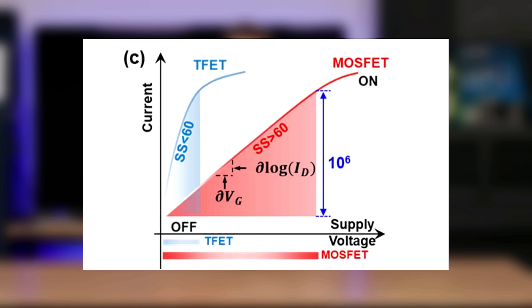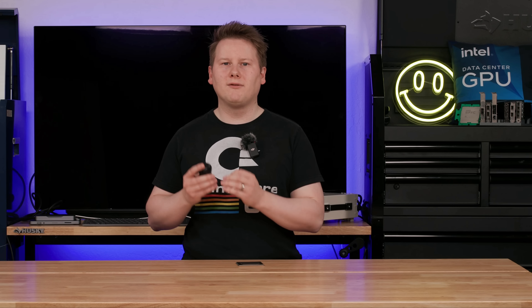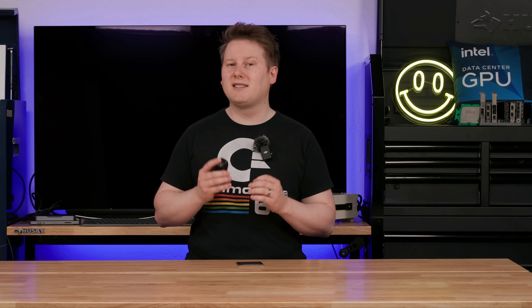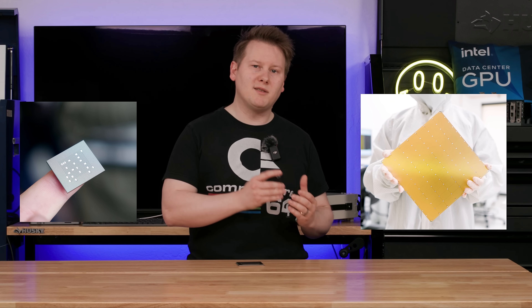The energy required to do this is much less than a standard transistor. The fundamental limit was previously 60 millivolts per decade, yet in this research paper, with the 2D channel material used, the group were able to achieve 18 millivolts per decade — a 70% decrease. Reducing the active voltage for modern processors by 70% would be a sizable improvement in anything from big AI chips down to smartphones and smart devices.